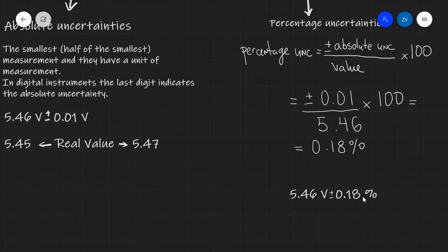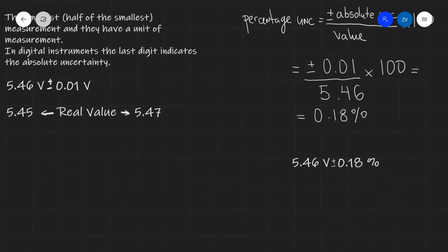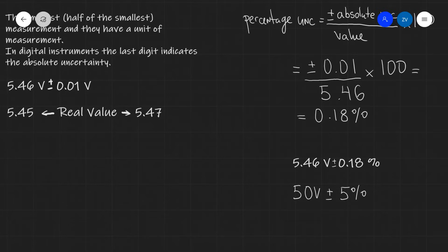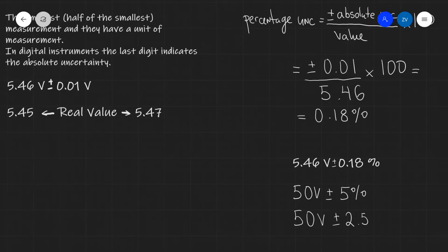If we're given the percentage uncertainty, we could really easily find the absolute uncertainty. For instance, if we had a different reading of 50 volts, and we're confident within plus or minus 5%, this is our reading with the percentage uncertainty, but our absolute uncertainty will just be 5% of 50 volts, which is just 2.5 volts. So the absolute uncertainty in this case will be 50 volts plus or minus 2.5 volts.